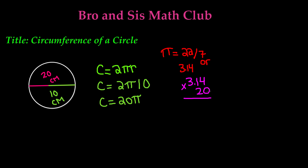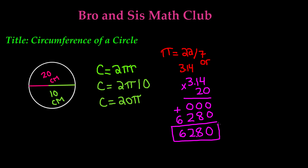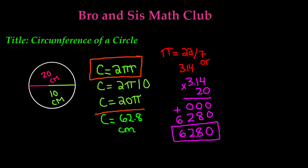Any number multiplied by 0 is 0, so 4 times 0 is 0, 1 times 0 is 0, and 3 times 0 is 0. Add a 0, then move to the tenths digits: 4 times 2 is 8, 1 times 2 is 2, and 3 times 2 is 6. Adding these together gives 6, 2, 8, 0. Moving the decimal point two places from right to left gives 62.8. That means the circumference of this circle is equal to 62.8 centimeters. This is how you find the circumference using the first formula C = 2πr, giving C = 62.8 centimeters.